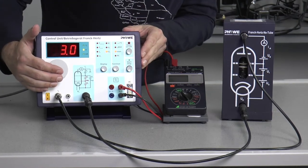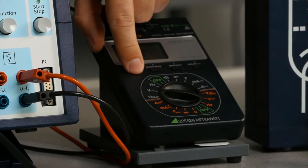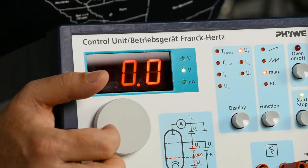Measurement of the collector current as a function of the acceleration voltage in steps of 1.5 volts from 0 to 95 volts.